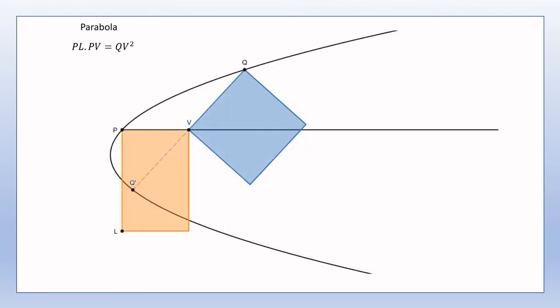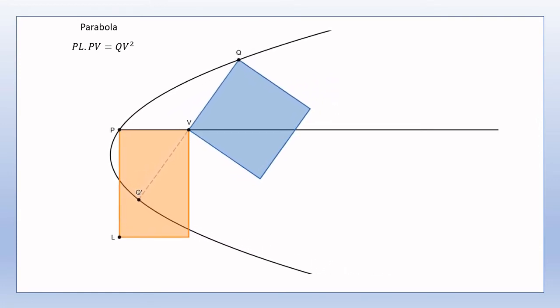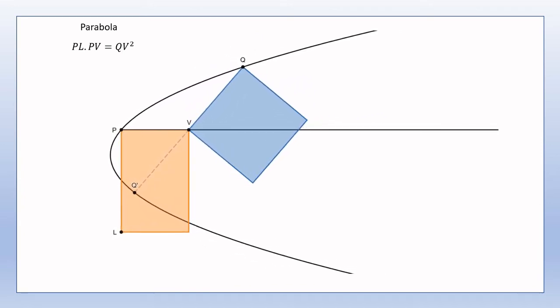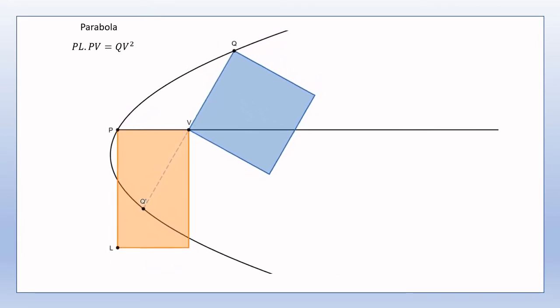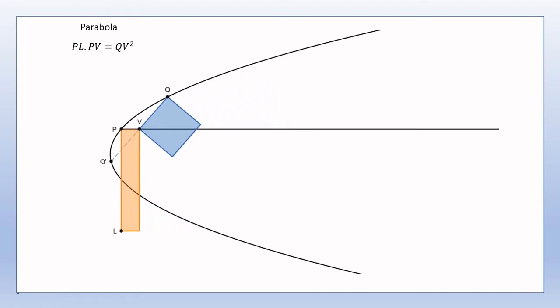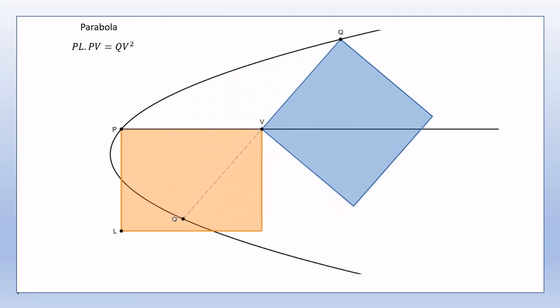In the diagram now shown, P is the point of intersection of the diameter of the parabola with the parabola. PL is again the latus rectum, PV is the abscissa, QV and Q'V are ordinates corresponding to the abscissa PV, and QQ' is a chord of the parabola. Notice that the diameter bisects QQ' but does not bisect it at a right angle, yet we still have that PL times PV is equal to Q'V squared. Varying the length of the latus rectum will have a similar effect on the shape of the parabola as in the case already considered. If we vary the abscissa, we see how the area of the square formed on Q'V has the same area as the rectangle with dimensions PL and PV.